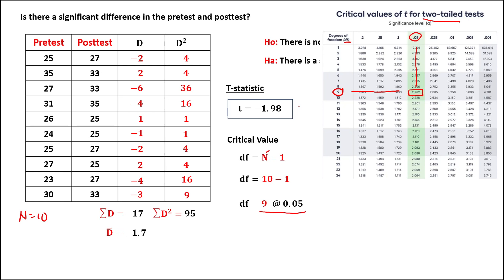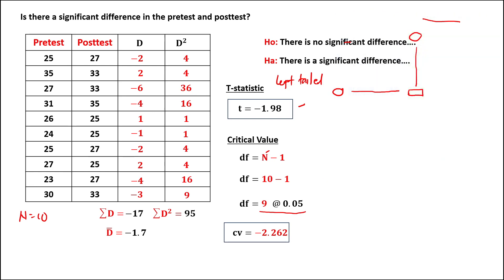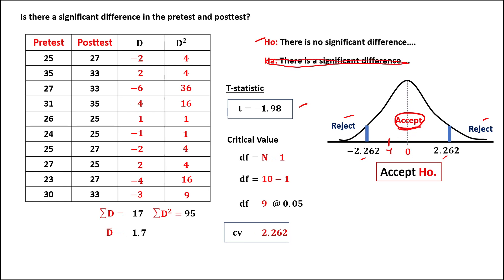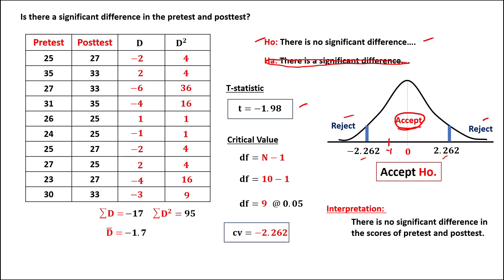Since our t-value is negative, we use negative 2.262. For the interpretation: from the normal curve, the acceptance region is between the critical values of negative 2.262 and positive 2.262, with rejection regions on the tails. Since our t-value of negative 1.98 is inside the acceptance region, we accept the null hypothesis. Therefore, there is no significant difference in the scores of the pre-test and post-test.